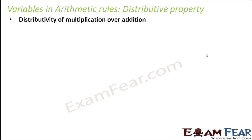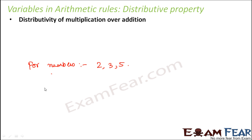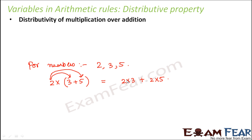Similarly, we will talk about another property — the distributive property. Let's recall it for numbers. As per the distributive property, if you have three numbers, let's say 2, 3 and 5, and you have something like 2 into (3 plus 5) — that is one number multiplied by the sum of the other two — then this becomes equal to 2 into 3 plus 2 into 5. It is called distributive property because 2 gets distributed to both the numbers 3 and 5. If you try to solve both sides, the result would be the same.